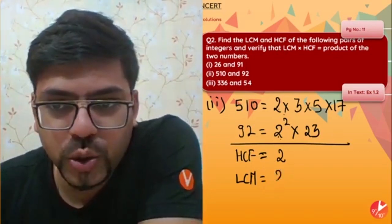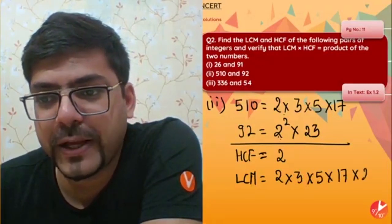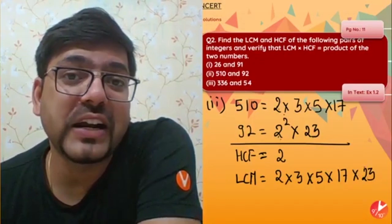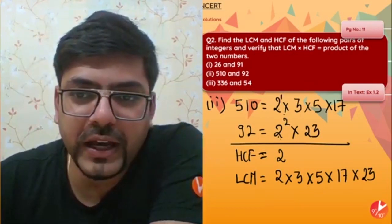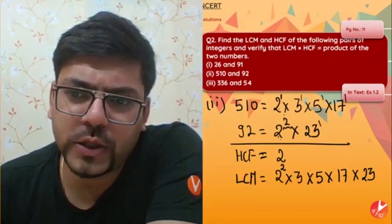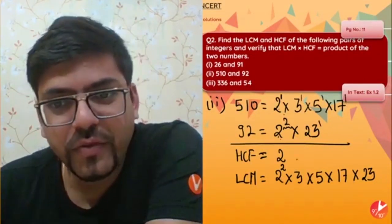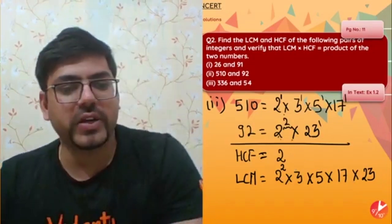For LCM, we always take the highest power of each prime factor. Here, 2 has power 1 in 510 but power 2 in 92, so we take 2². All other primes (3, 5, 17, 23) have highest power 1. So LCM = 2² × 3 × 5 × 17 × 23. Note: there's no difference to make since the other factors each appear only once.